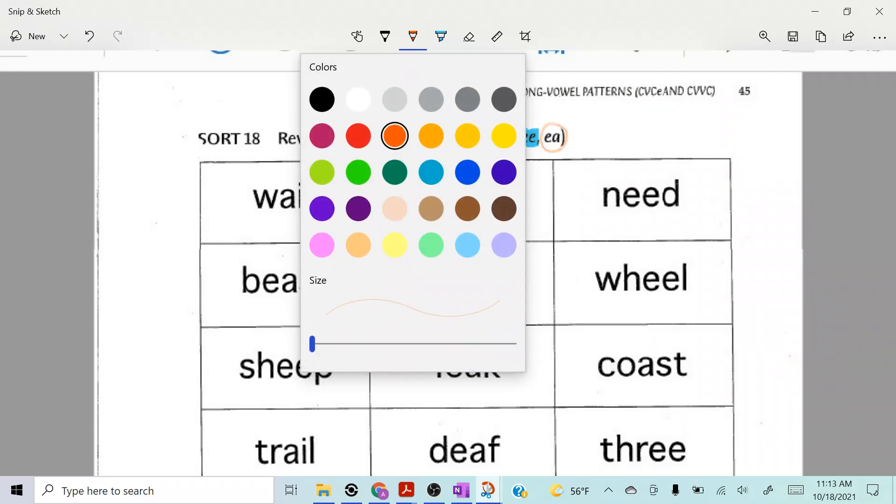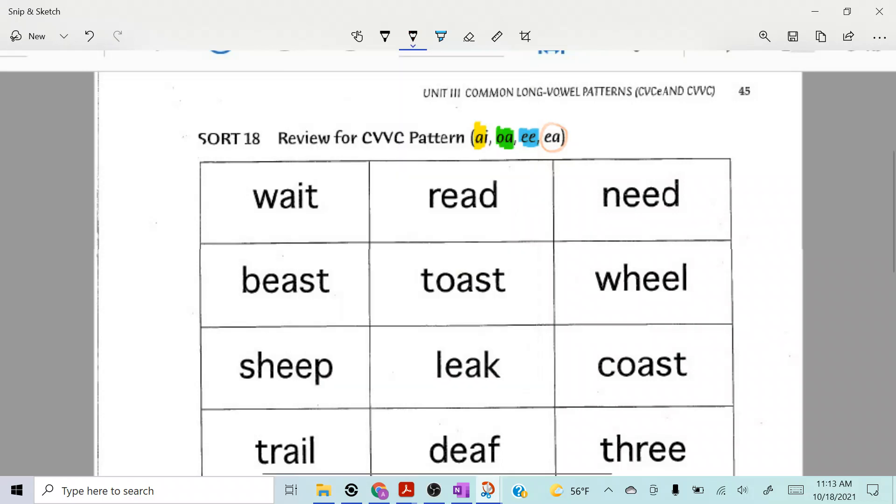There's going to be another pattern for ea and it's going to be ea short and then there's ea long. Ea long we're going to put an orange circle around it. Okay, ee would be long e, right?